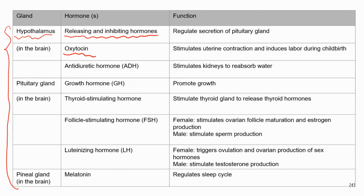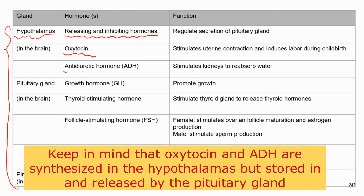The hypothalamus also secretes oxytocin. Oxytocin is important for childbirth because it stimulates the contraction of the smooth muscle in the uterine wall, which pushes the baby out. So oxytocin is critical for childbirth and also induces labor.